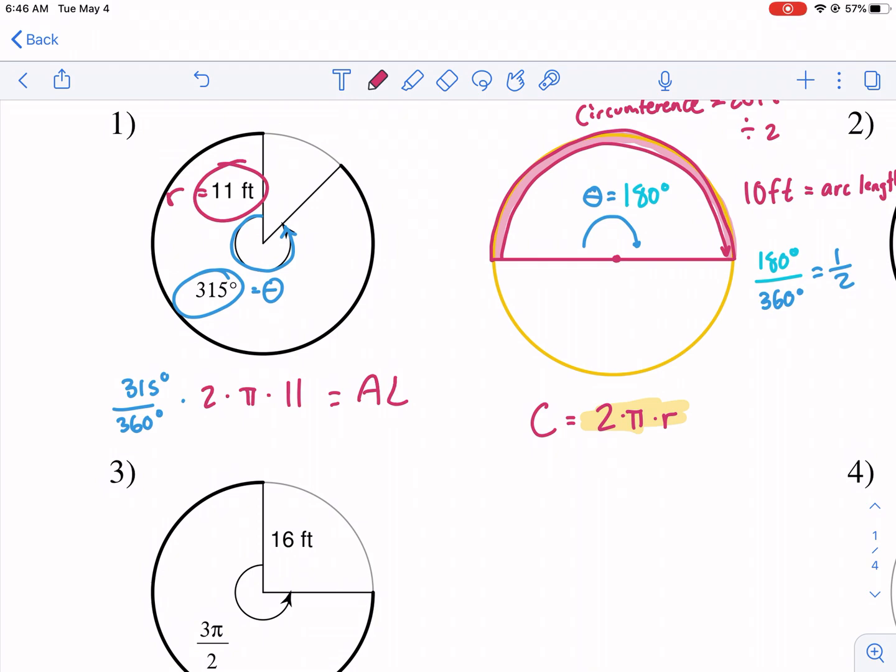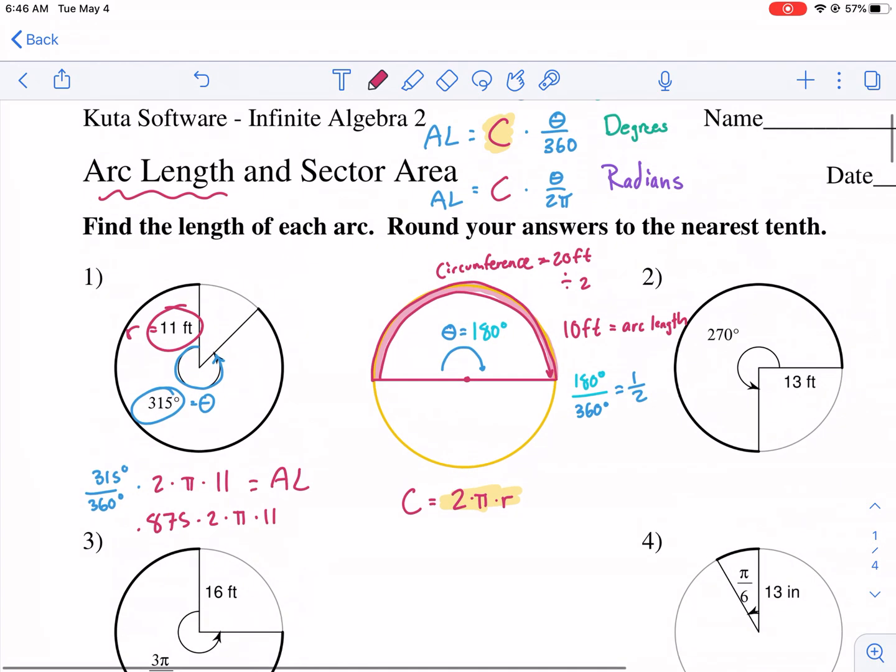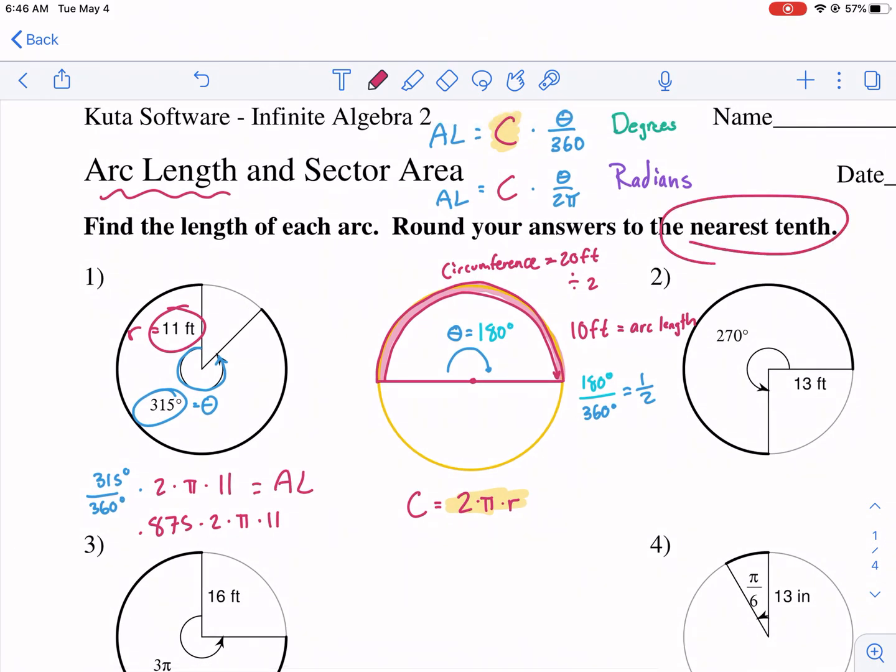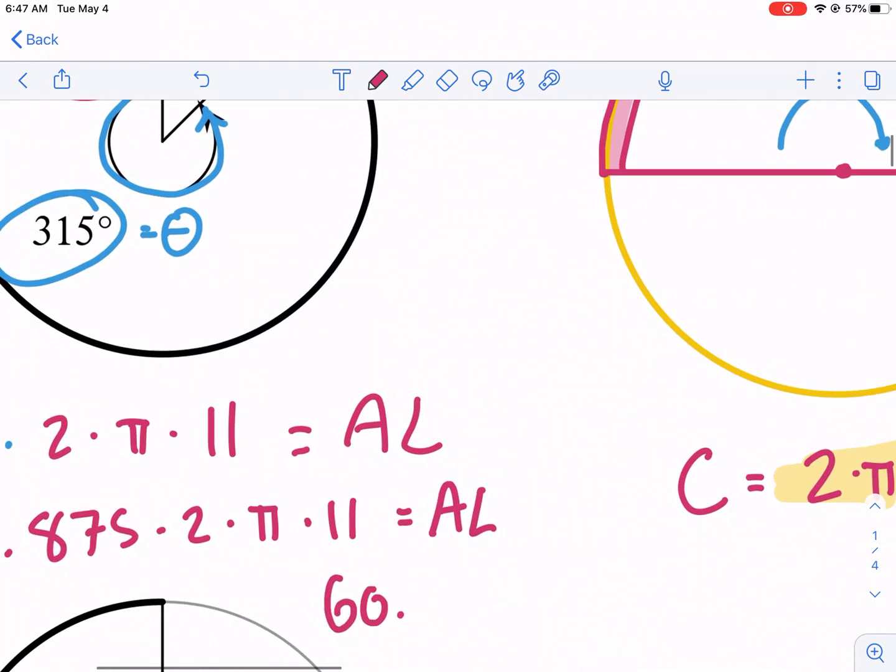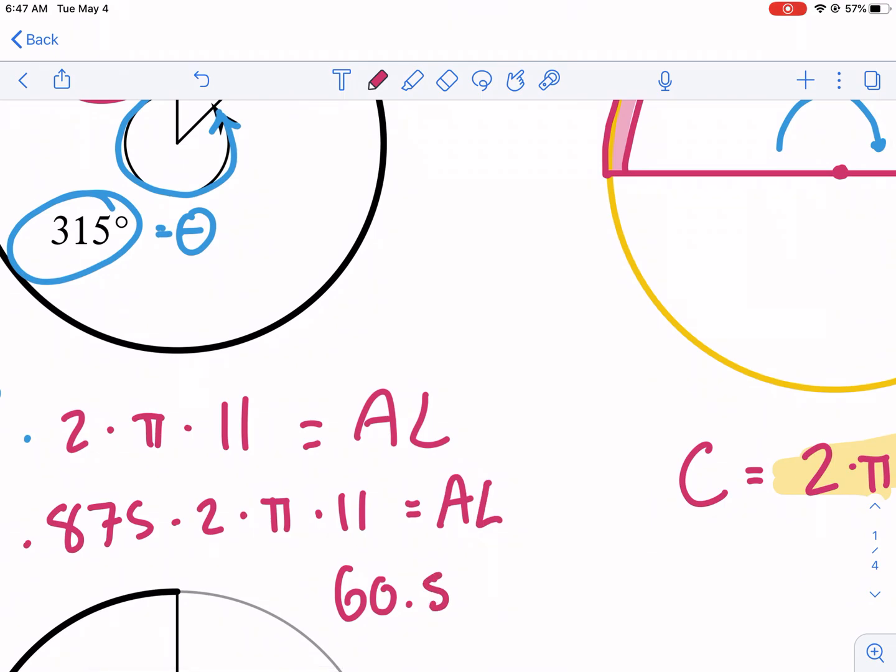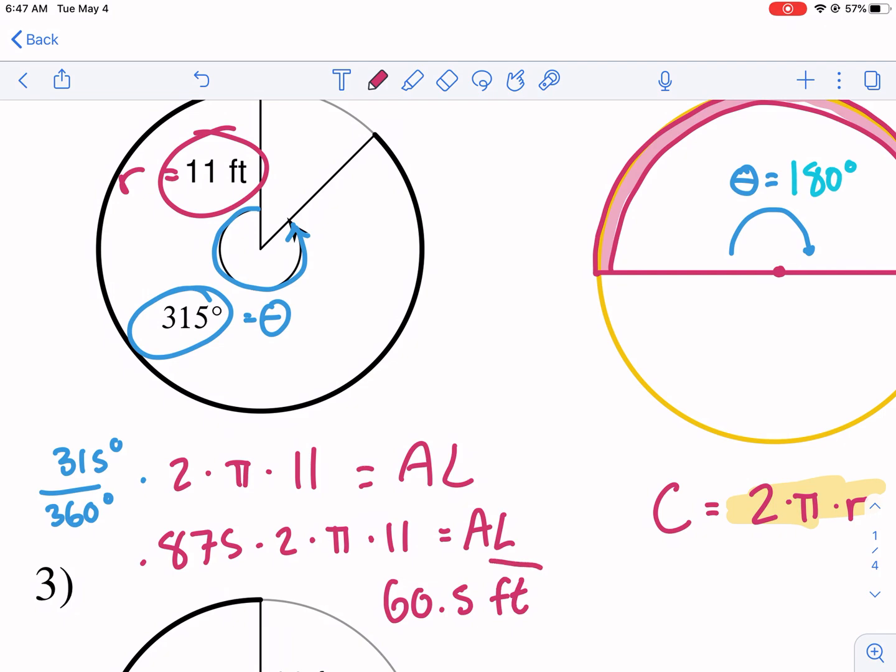Now it's just getting our calculators and typing this all in. So I'm going to start with 315 divided by 360 on my calculator. I get 0.875. I'm going to multiply that by 2, multiply that by π, multiply that by 11. It says we're rounding to the nearest tenth. It says not to leave it in terms of π. You could leave this in terms of π too. I'll show you both just in case. So first I'm going to show it in terms of a decimal. I'm just typing this straight across into my calculator. Arc length, and I get 60.5 feet for my arc length.